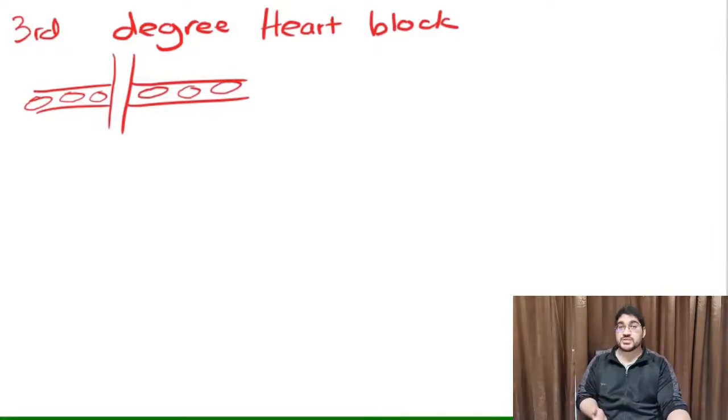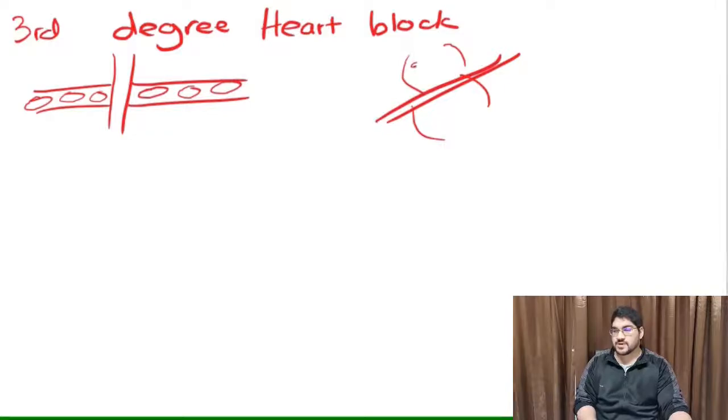In terms of the ECG, what that means is the atria and the ventricles are totally electrically separated. The impulses firing from the SA node that would normally go through the AV node to the ventricles are blocked off. They can't get through. So wait, but the ventricles are still contracting. How's that happening?